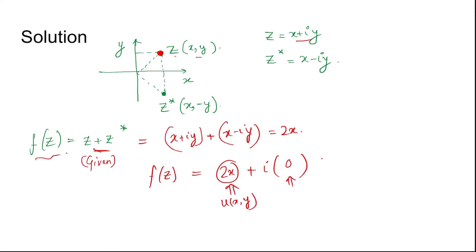So this is u(x,y) and this is v(x,y) which is 0. Now if we analyze the necessary condition: du/dx will be 2, du/dy will be 0, dv/dx will be 0, dv/dy will be 0. Now all are existing, so necessary condition is satisfied.